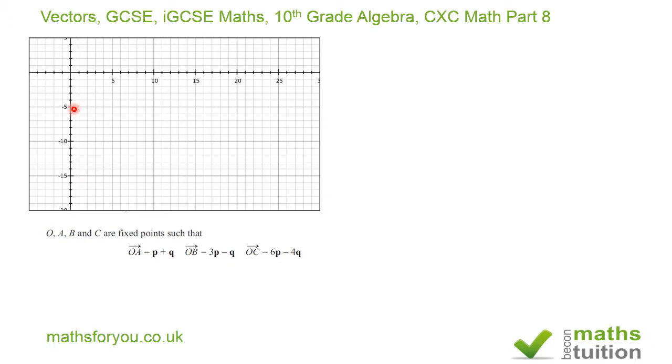For this grid, five units are equivalent to P. If you move parallel to the x-axis to the left, it becomes minus P. Similarly, if you move upwards parallel to the y-axis, five units represent Q, and if you move down, five units represent minus Q.